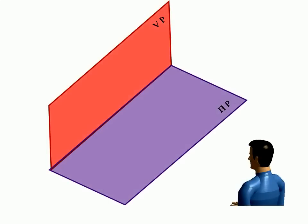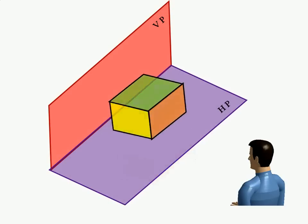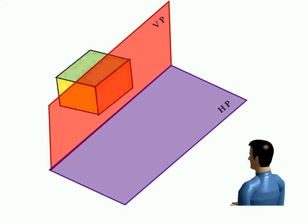The object may be situated in any one of the quadrants. Position of the object relative to the reference planes is described as above the HP or below the HP, in front of VP or behind the VP.